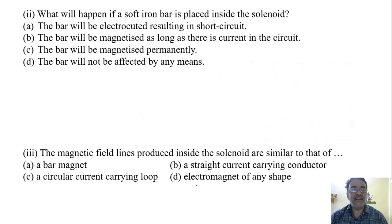So now we will move towards the second question. What will happen if a soft iron bar is placed inside the solenoid? The bar will be electrocuted resulting in short circuit. The bar will be magnetized as long as there is current in the circuit. The bar will be magnetized permanently. The bar will not affect by any means. So here the B option is the most appropriate.